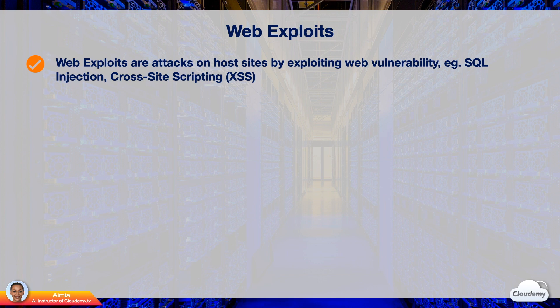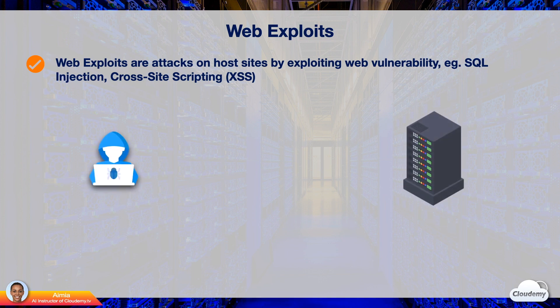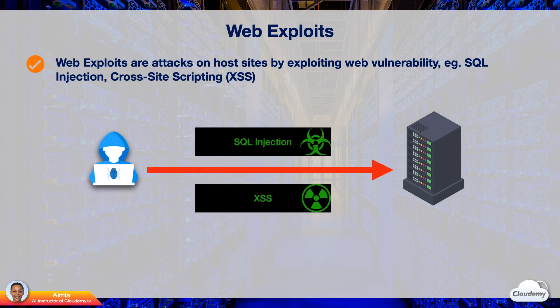Common web exploits are SQL injection and cross-site scripting. Attackers send malicious SQL queries or client-side JavaScript code to the target in order to steal data, destroy databases, or hijack the website. Attackers usually use automated programs to scan for vulnerabilities such as HTML forms or APIs allowing execution of SQL code, client-side JavaScript code, or server-side command code. Once the vulnerability is found, attackers send the malicious code to the server or database.